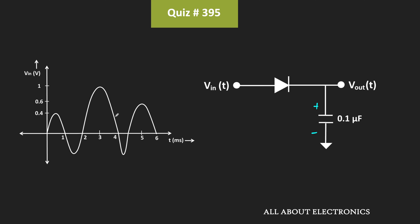So whenever this input signal is applied, then up to 0.3V this diode will act as an open circuit because up to that point the voltage at the anode is less than the cathode. Now as soon as this input voltage crosses 0.3V, then once again this diode will start conducting and it will act as a short circuit. So in this condition, this capacitor will charge up to the input voltage.